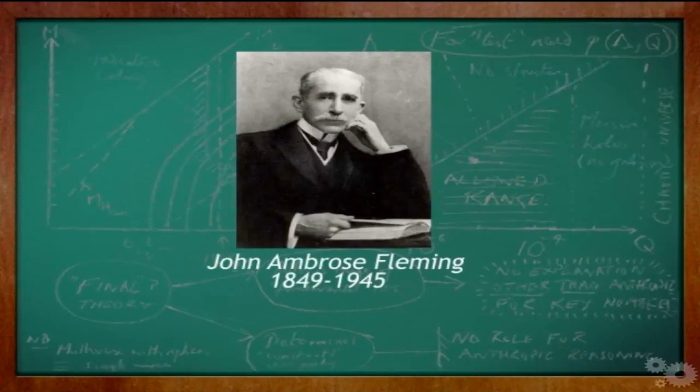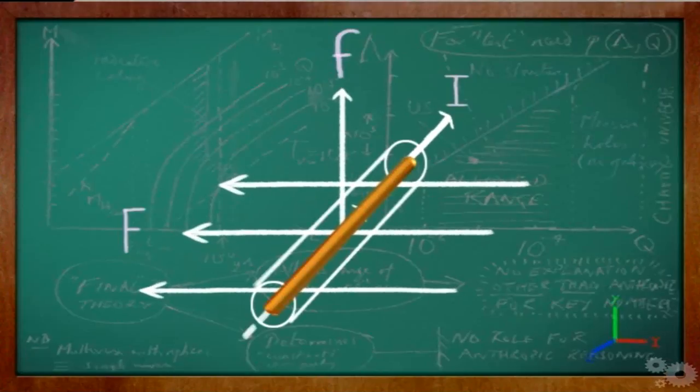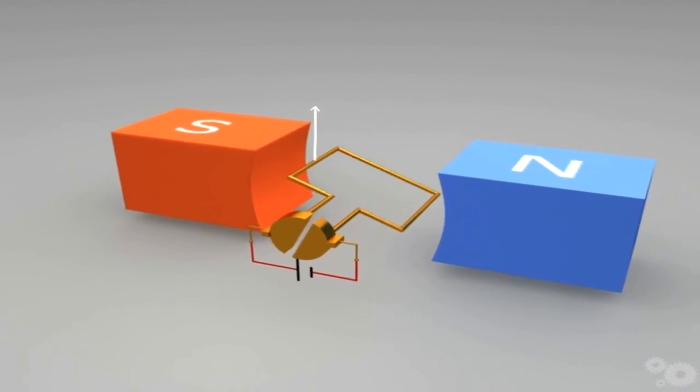This rule was proposed by John Ambrose Fleming in the late 19th century as a simple way of working out the direction of motion in an electric motor or the direction of electric current in an electric generator.